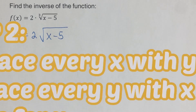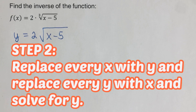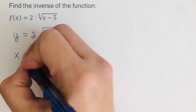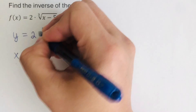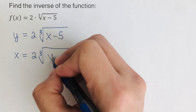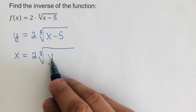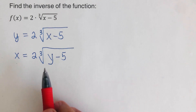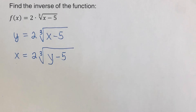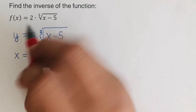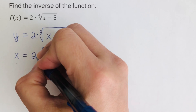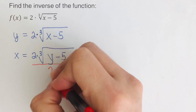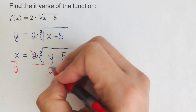The second step is to replace every x with y and every y with x, and solve for y. So we change this to x, and that is equal to 2 times the cube root of y minus 5. Part of this step is to isolate y. There is a 2 in front — an opposite of multiplication is division — so we divide both sides by 2 and cross the 2 out.